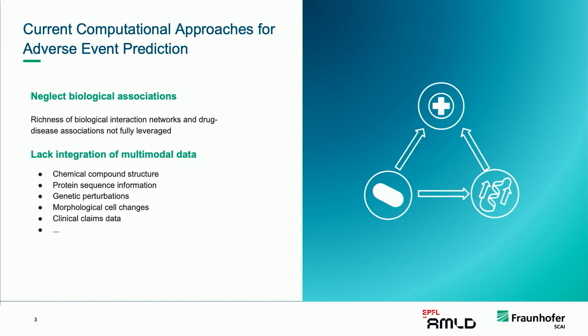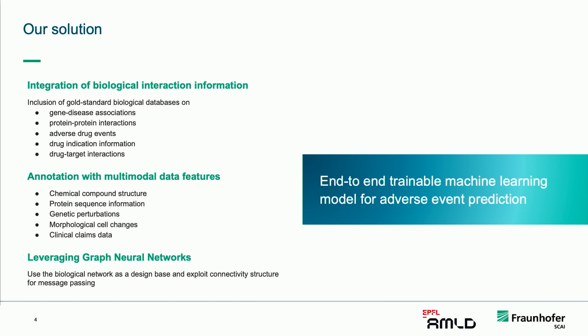There are computational approaches out there for adverse drug event prediction that are also graph focused, but they do have their limitations. Usually they do not integrate the richness of information of biological associations from several databases, and they also do not really integrate the richness in multimodal information on all of the structures like proteins or drugs that are out there. So we thought to address these limitations and develop an integrative graph machine learning approach that is end-to-end trainable.